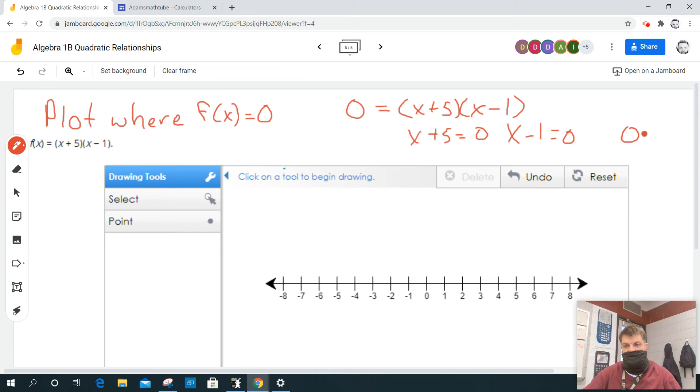Why did we do that? Because zero times zero equals zero. Well, if I do algebra, I get x equals negative five. Right, x equals negative five.